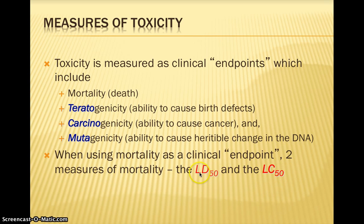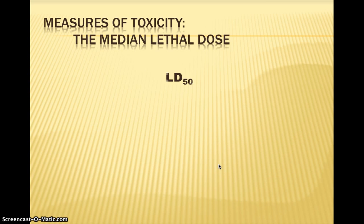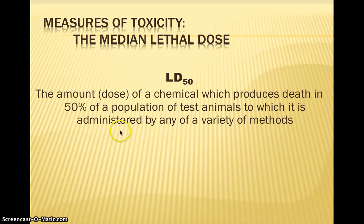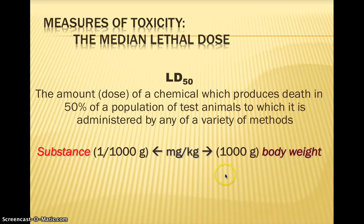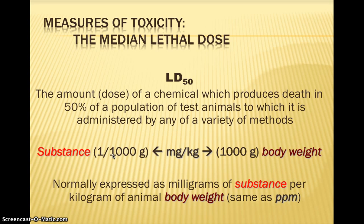We've already talked about the LD50 — the lethal dose 50. Pause the video and write down: what is the LD50 of a chemical? The LD50 is the lethal dose at 50% — the dose of a chemical that produces death in 50% of a population. Exposing test subjects to a certain dose will cause death in about 50% of them. It's normally expressed in parts per million: how many parts per million will cause death in 50% of the population?